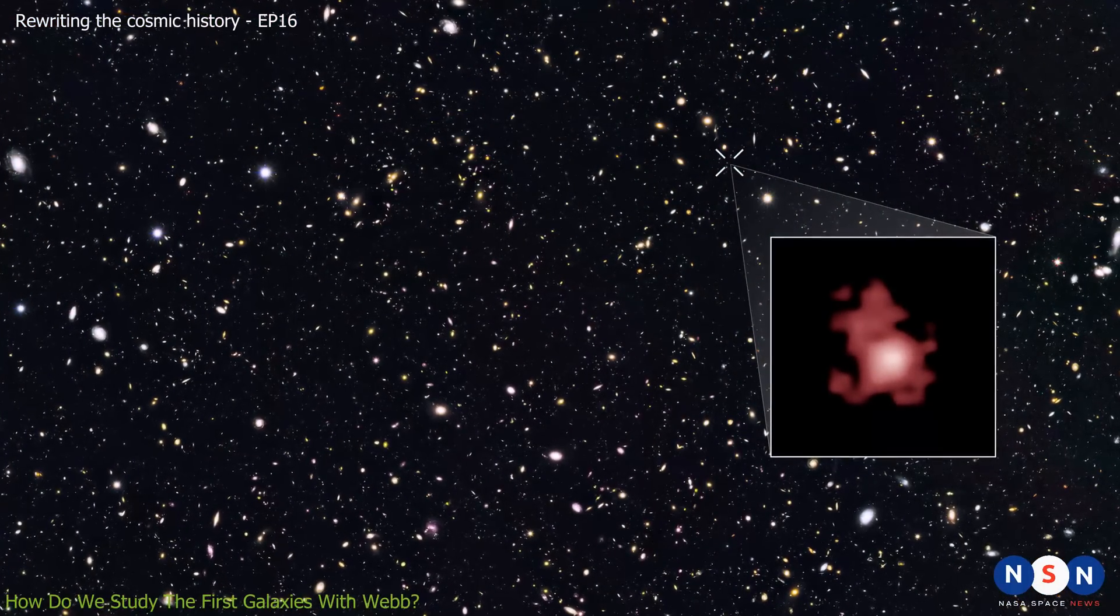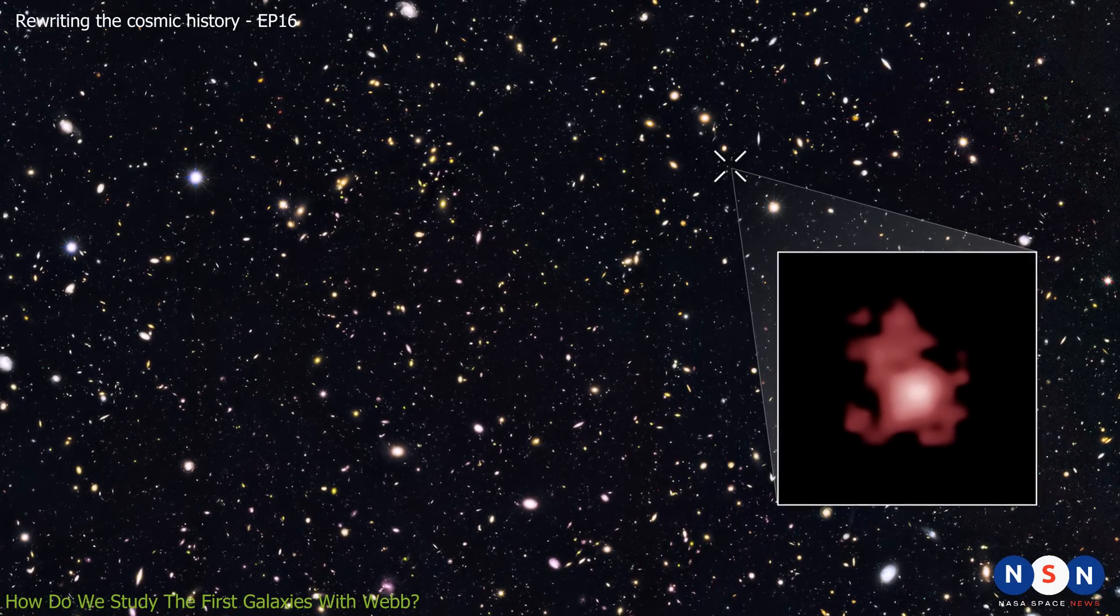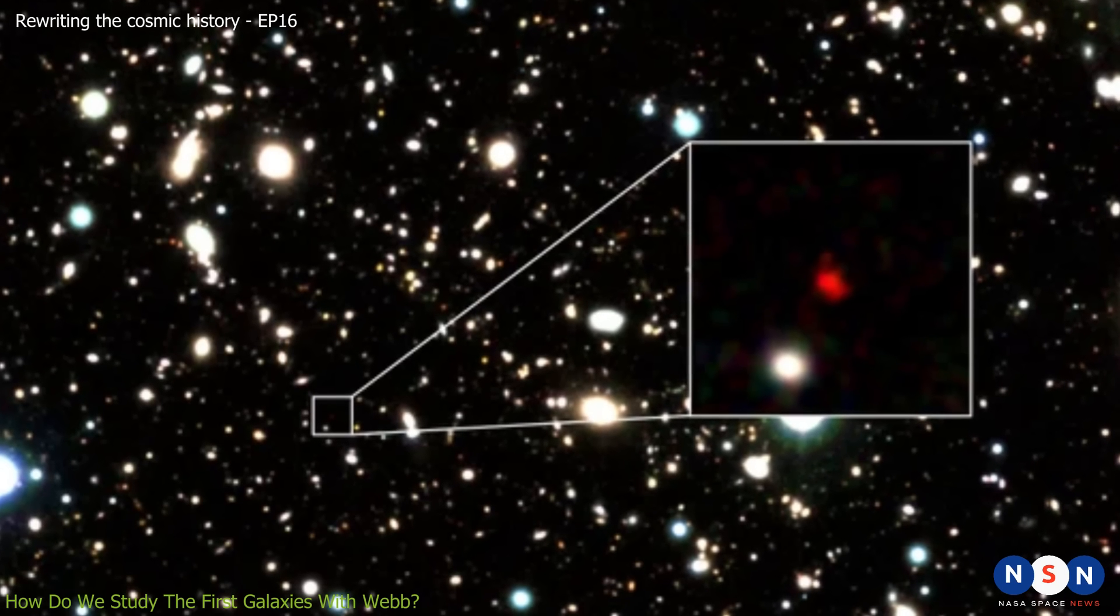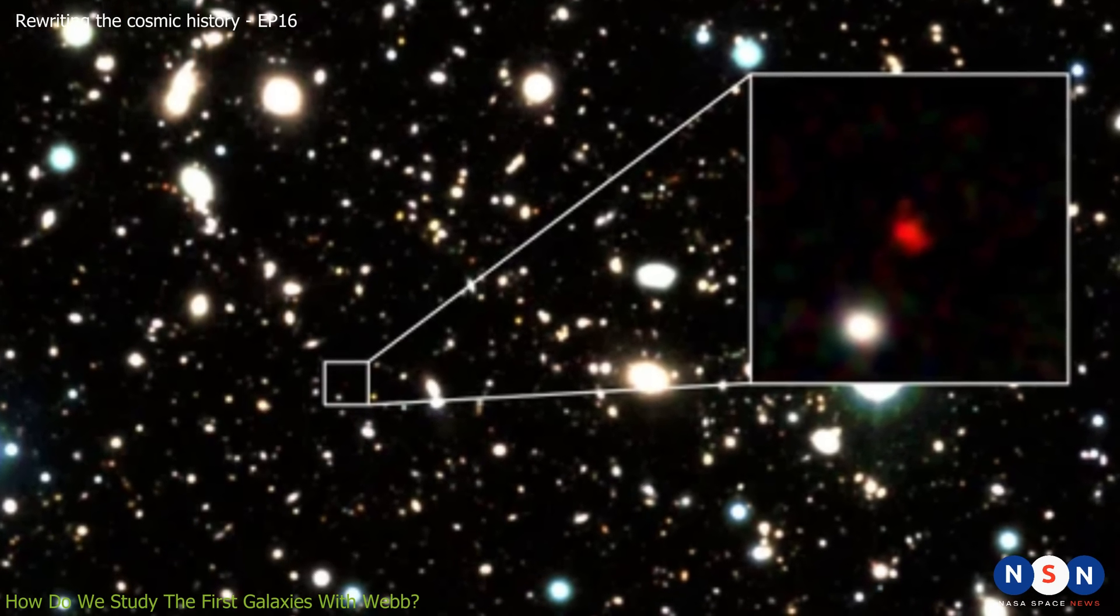To put this in perspective, the most distant galaxy ever observed by the Hubble Space Telescope has a redshift of Z=11.1, and the most distant galaxy ever observed by any telescope has a redshift of Z=11.9.